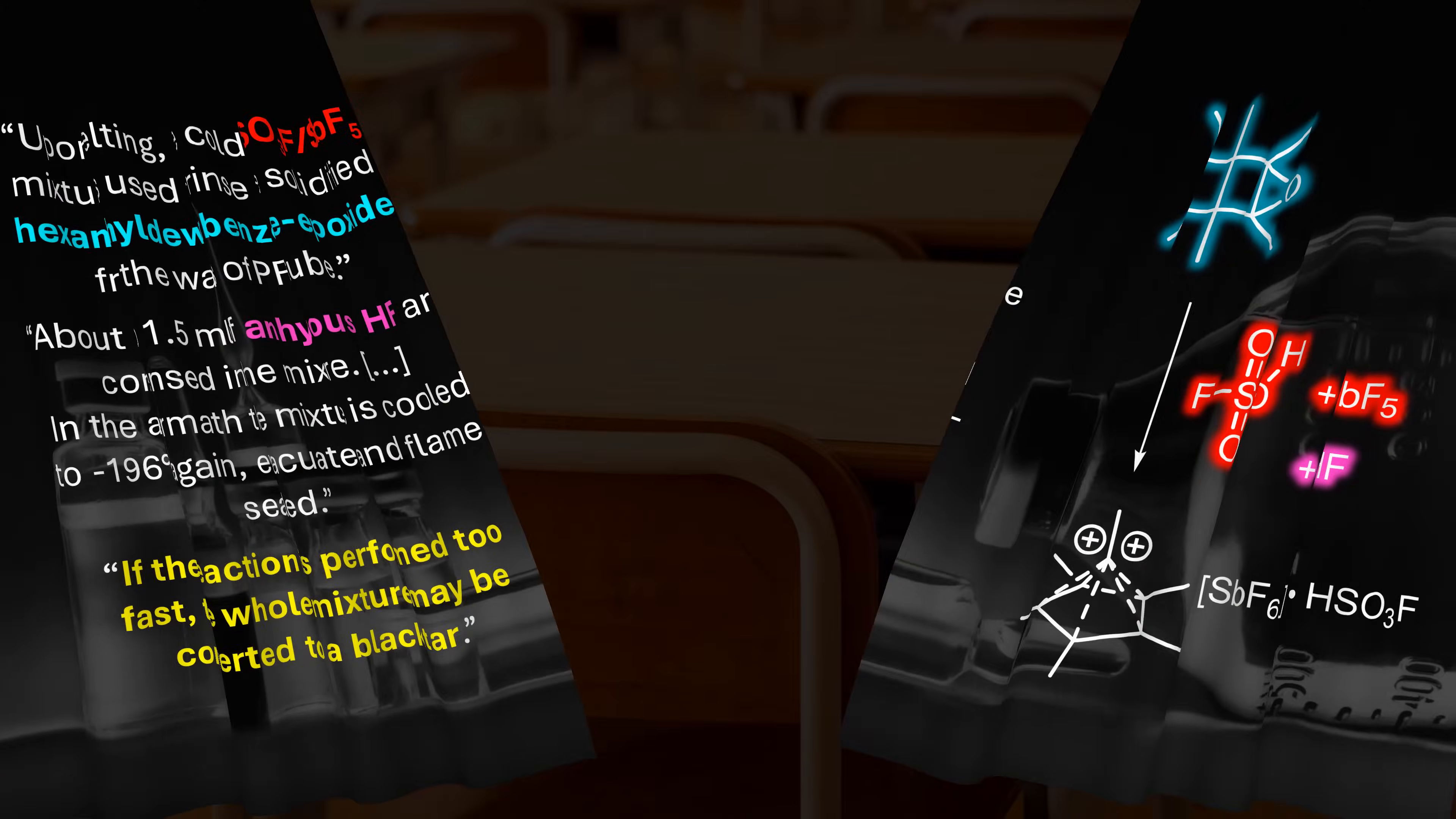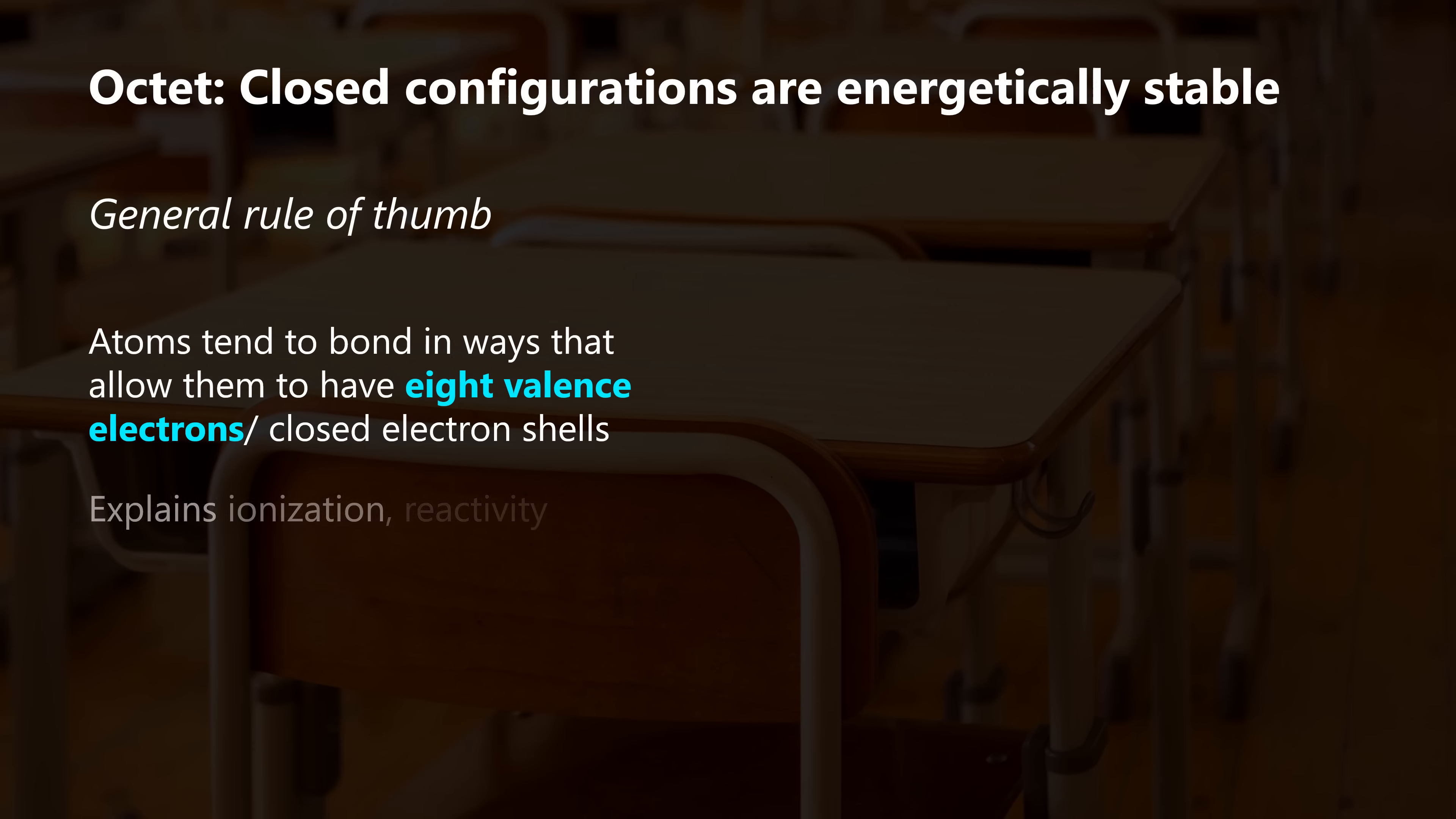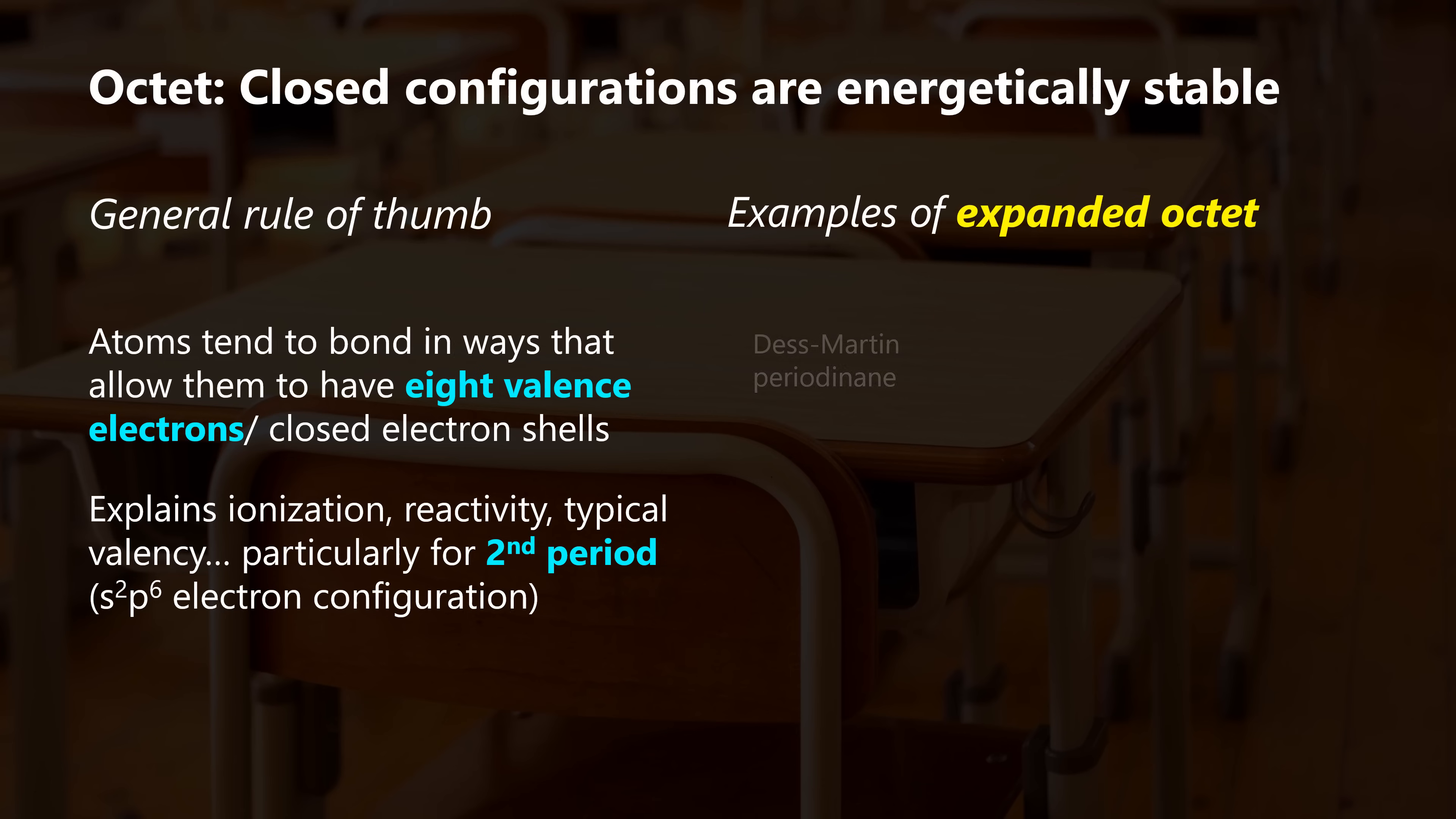To refresh our memory, elements in the second period typically form compounds that satisfy the octet rule, which states that atoms strive to surround themselves with eight valence electrons or four bond equivalents. However, once we go to lower periods, larger elements start to misbehave. For example, the halogen fluorine can't expand its octet, but hypervalent iodine compounds like the Dess-Martin periodinane oxidant are common.